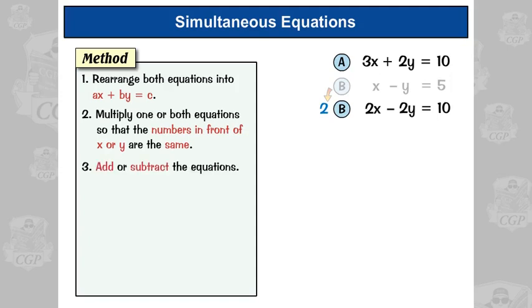Right, now for the clever bit. We have to add or subtract the equations. So if we add this equation onto this equation, what happens to the y's? Well, we'll get plus 2y plus minus 2y, so we'll get zero y. So we'll get rid of the y's, which is what we want to do. So let's do it.